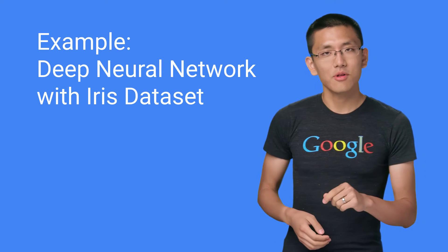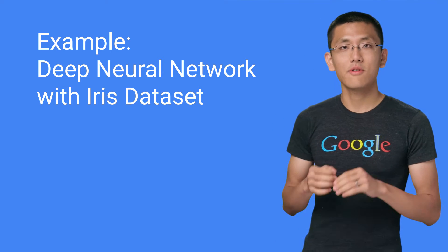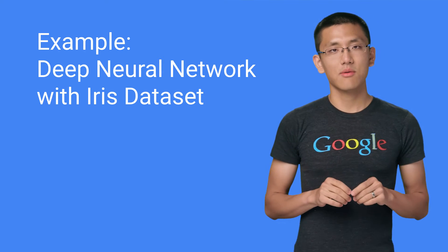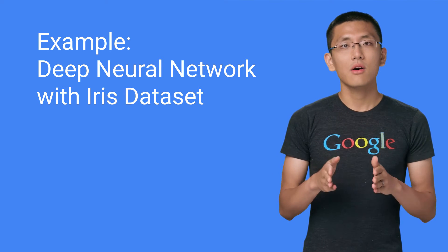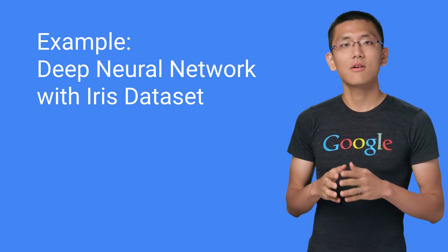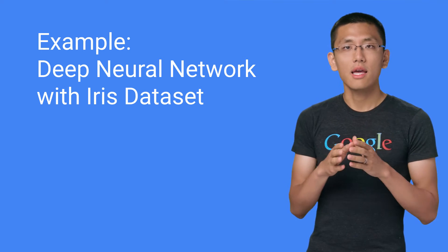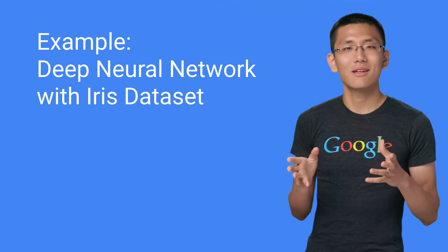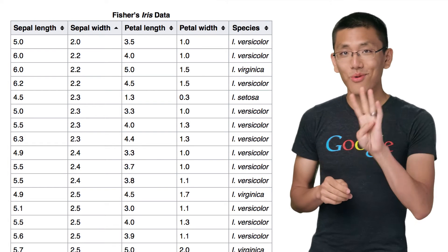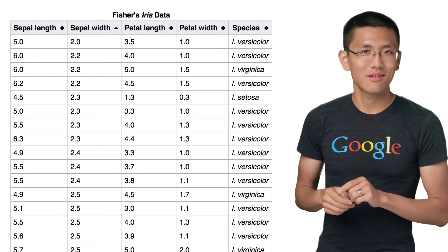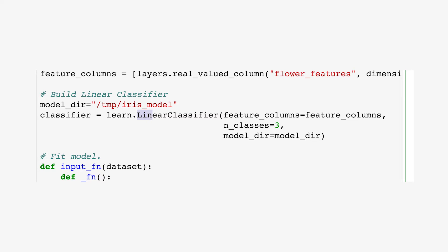Let's see an example of how to update our iris example from a linear model to a deep neural network, often abbreviated as DNN. We don't have time in this video to properly show off a 2,000 column model that a DNN would leverage, so I'm just going to use the four that we've been using throughout this series. The main change comes from replacing our linear classifier class with DNN classifier, which will create a deep neural network for us.